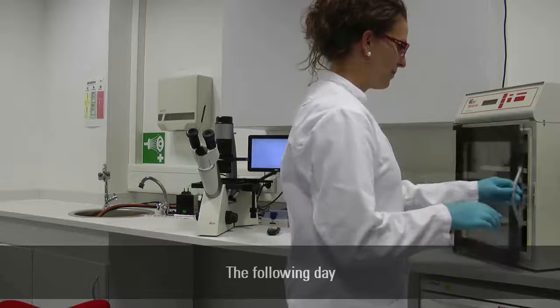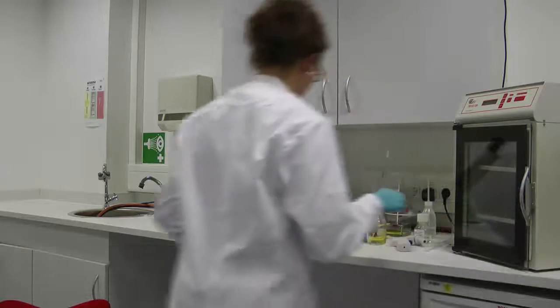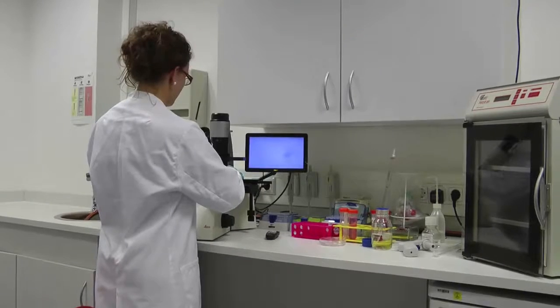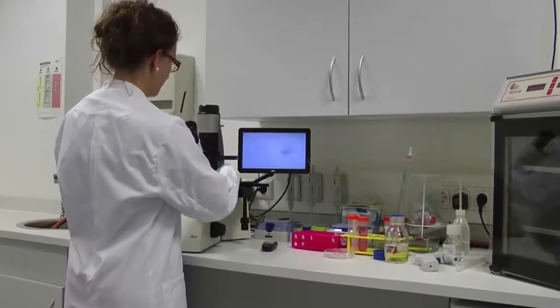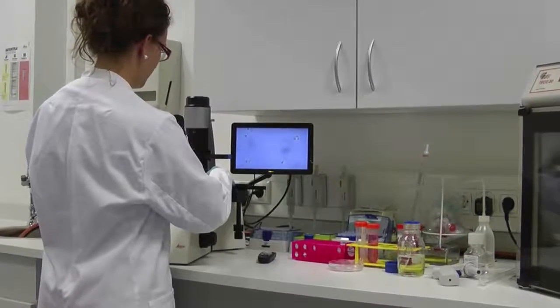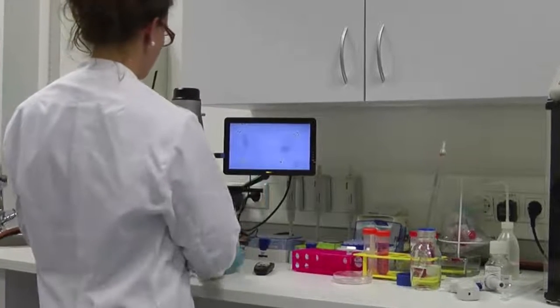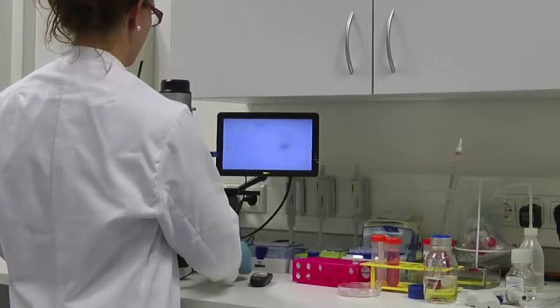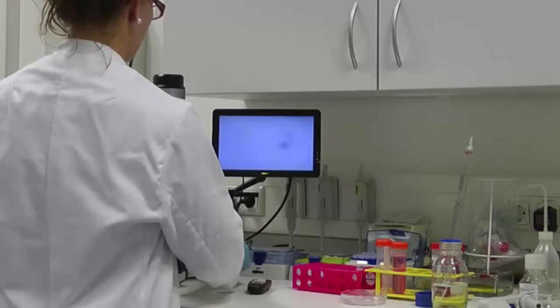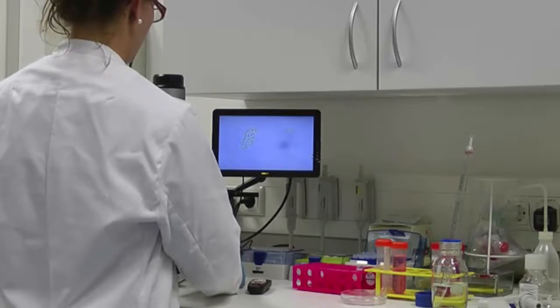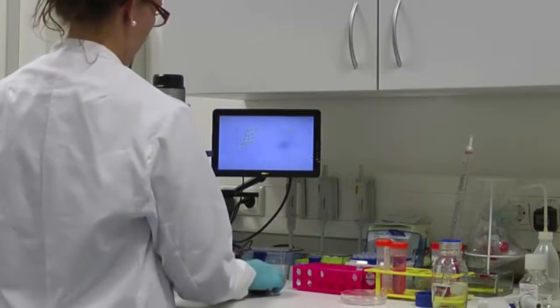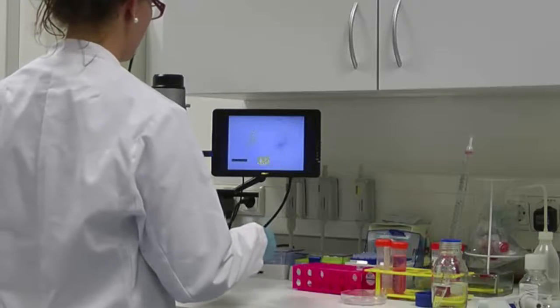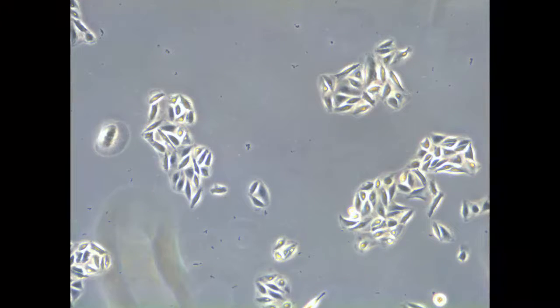Check cells 24 hours later under the microscope for shape, adhesion and contamination. Cells should be attached to the bottom of the dish and starting to grow and divide. Grow cells until they are confluent and ready for your experiment or next subculture.